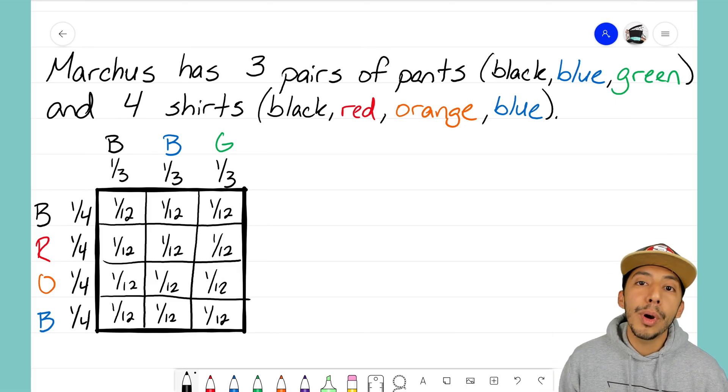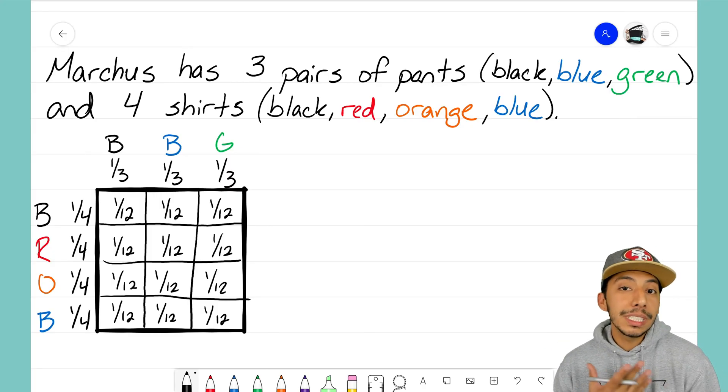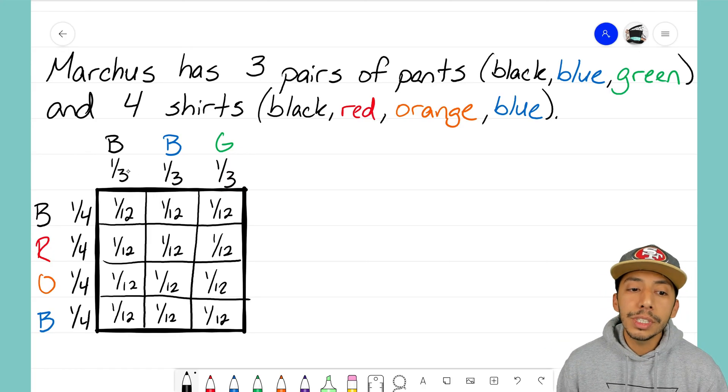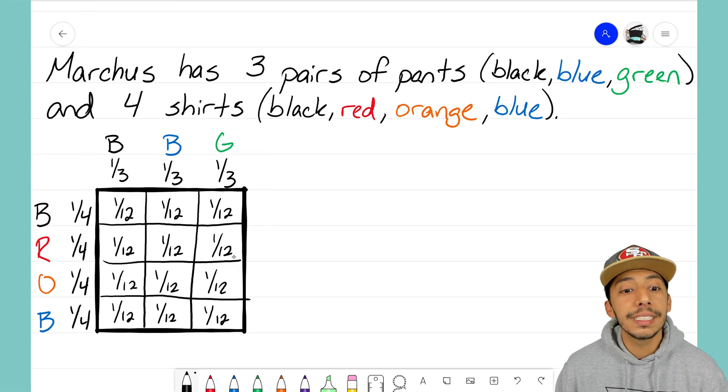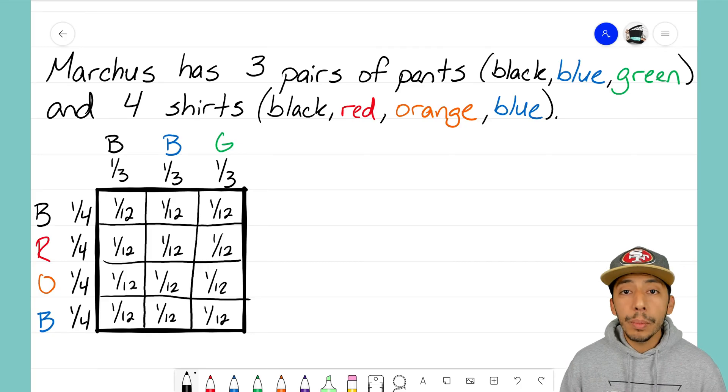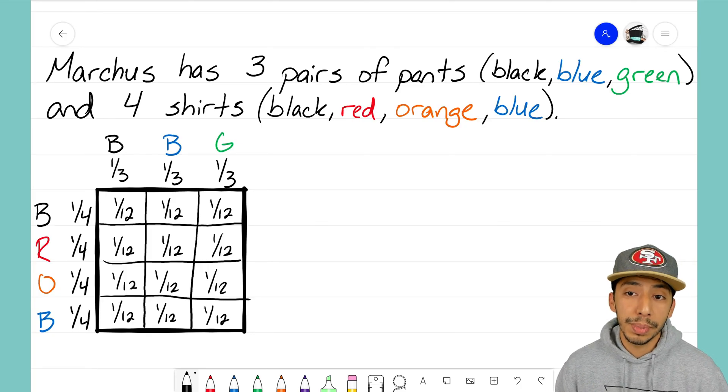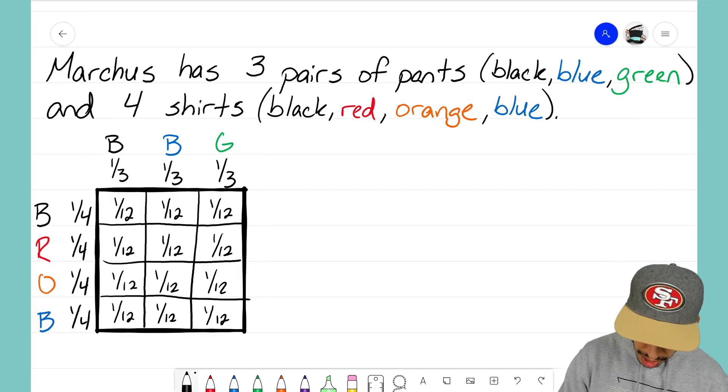Again, this is a simple problem so the fractions all end up being the same. But just imagine if these fractions were different, then all of these numbers inside the rectangle would have different values that wouldn't all be one out of twelve, because it just depends on the two fractions you're multiplying.